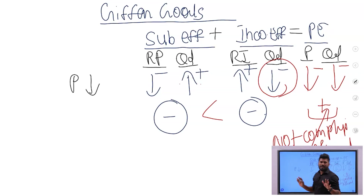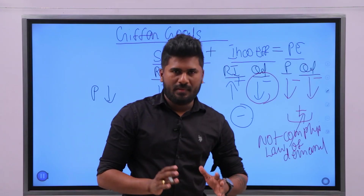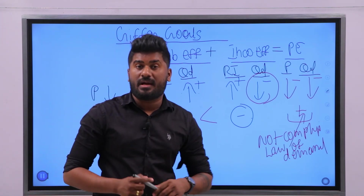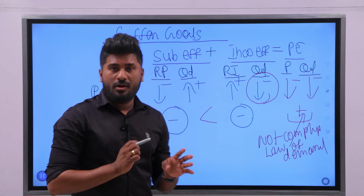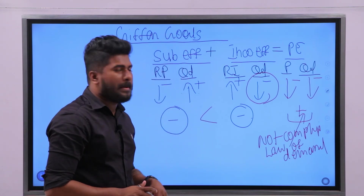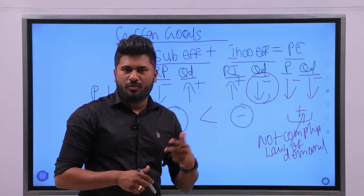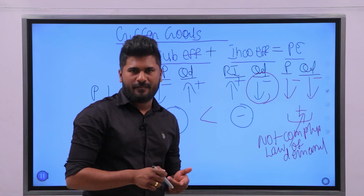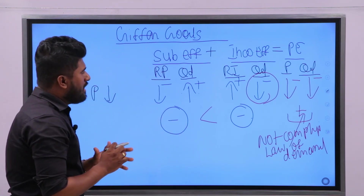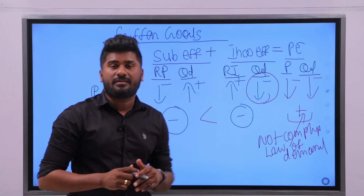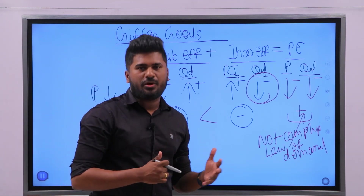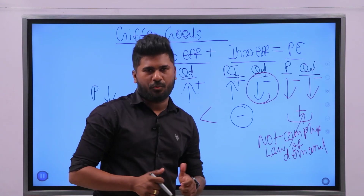So I hope all of you got a perfect understanding about the price effect of normal goods, inferior goods, and Giffen goods. If you have any questions, please comment. Always remember these things with reasons, and then you can answer any question at the exam paper. Thank you.